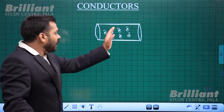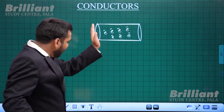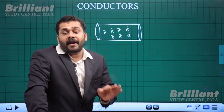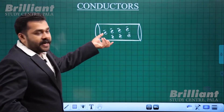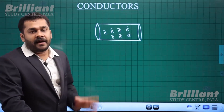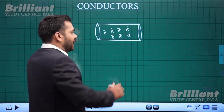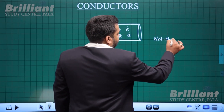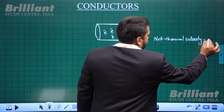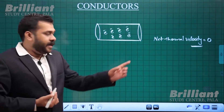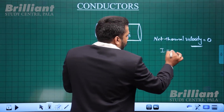In electron motion, there is random orientation. The net average velocity towards the left is equal to the net average velocity towards the right. When no potential difference or electric field is applied, the surrounding temperature causes random orientation. The net thermal velocity — velocity due to temperature — becomes zero. So net thermal velocity is zero, and we have no potential difference applied, meaning net current through this conductor is zero.